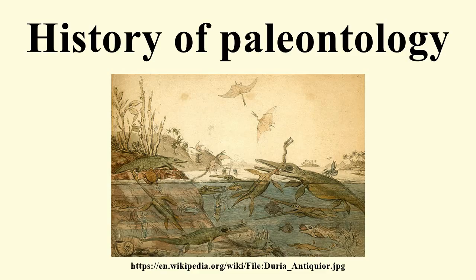Steno, like almost all 17th-century natural philosophers, believed that the Earth was only a few thousand years old, and resorted to the biblical flood as a possible explanation for fossils of marine organisms that were far from the sea. Despite the considerable influence of Forerunner, naturalists such as Martin Lister and John Ray continued to question the organic origin of some fossils. They were particularly concerned about objects such as fossil ammonites, which Hooke claimed were organic in origin, that did not resemble any known living species. This raised the possibility of extinction, which they found difficult to accept for philosophical and theological reasons.